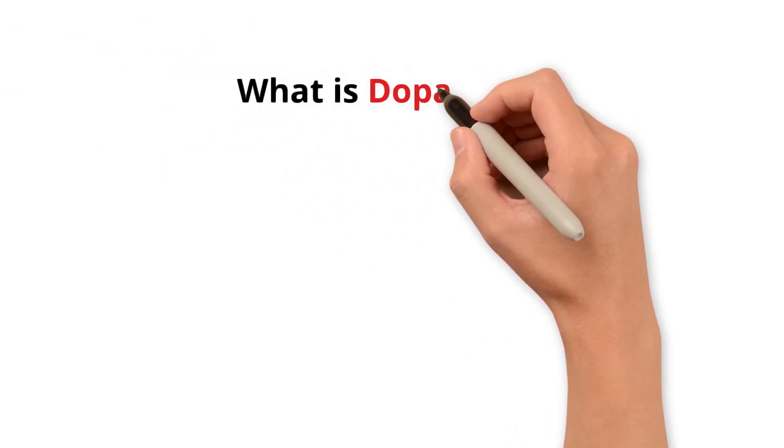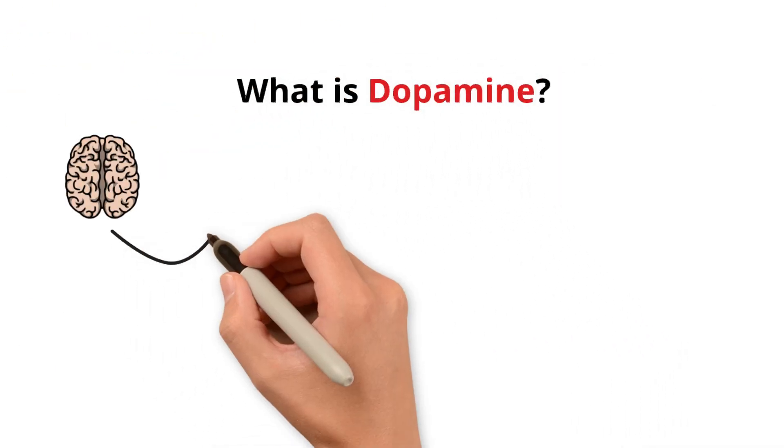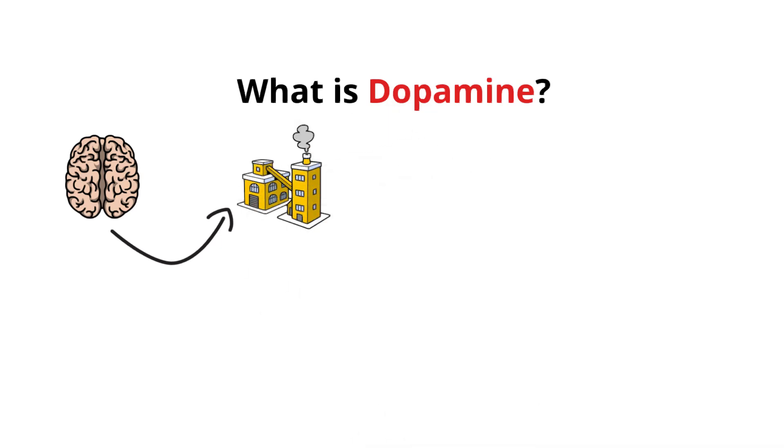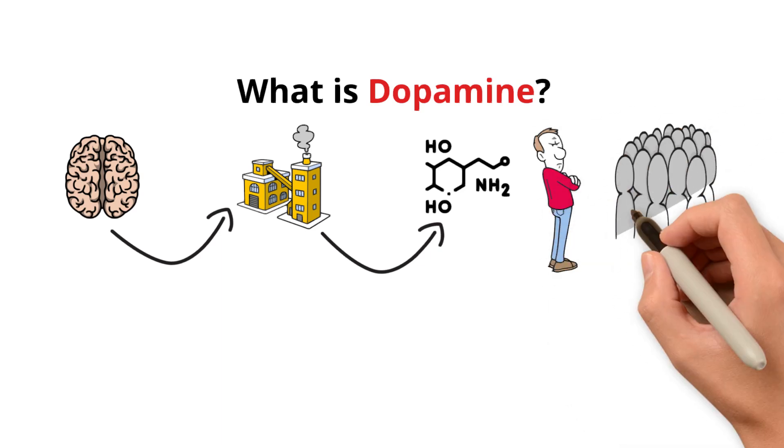Let's start with a simple question. What is dopamine? Imagine your brain is a company. Now, in this company, there's one worker who's in charge of everything. Dopamine. This worker gives commands, sets the pace, and controls all the other workers.